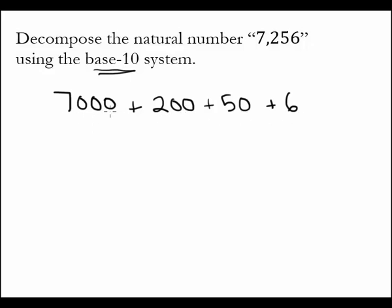Now 7,000 is nothing more than 7 times 1,000. 200 is nothing more than 2 times 100. And we can keep this going, 50 is nothing more than 5 times 10.